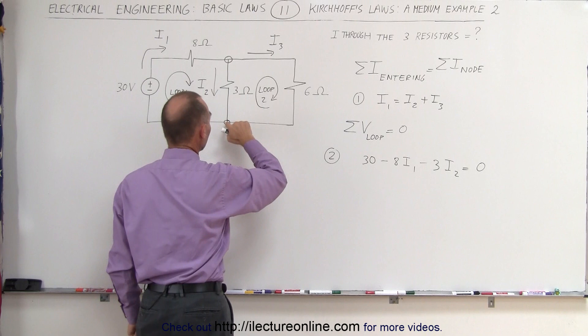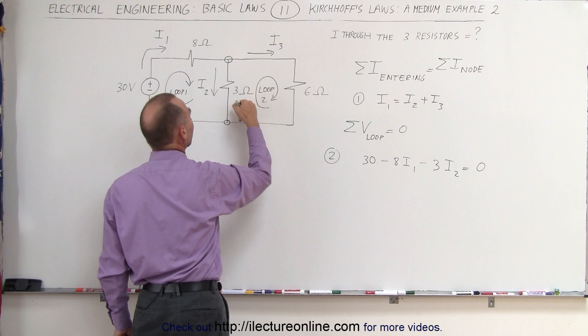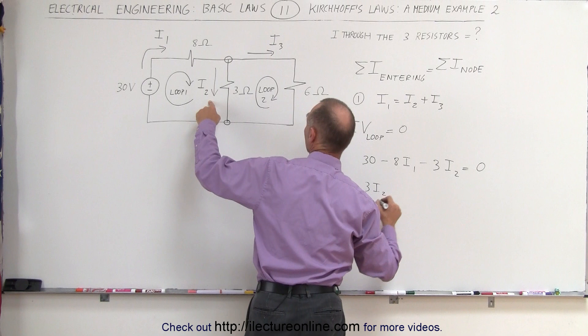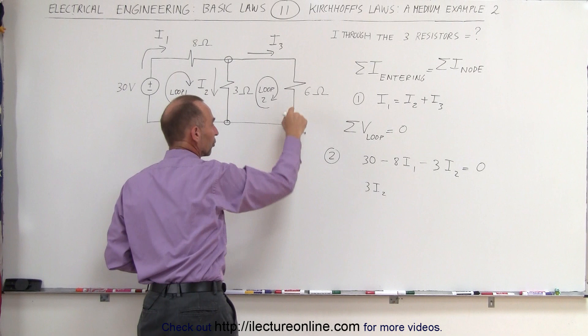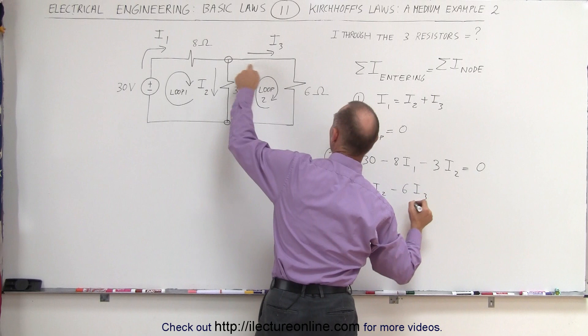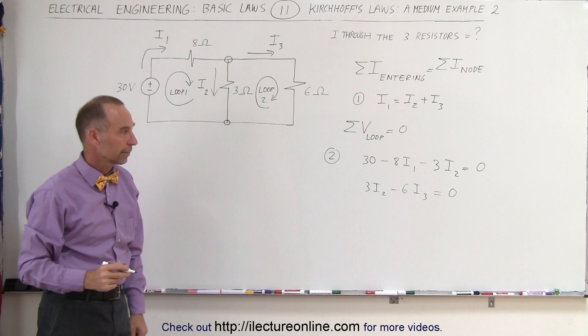For the second loop, starting again from the same node, we go across this resistor but now against the current flow, so that's a voltage rise: 3 times I2. Then we go across this resistor in the same direction as the current — that's a voltage drop — minus 6 times the current I3. Now we've made a complete loop, so that must also add up to 0. That is equation number 3.